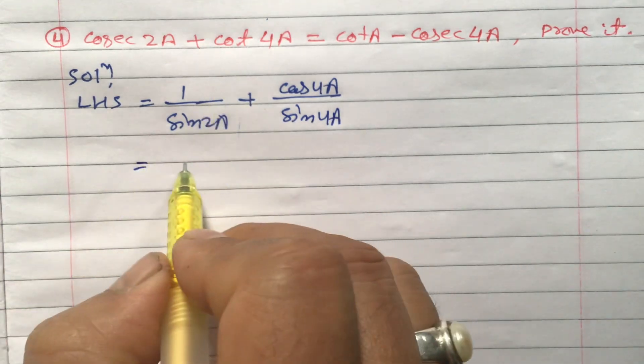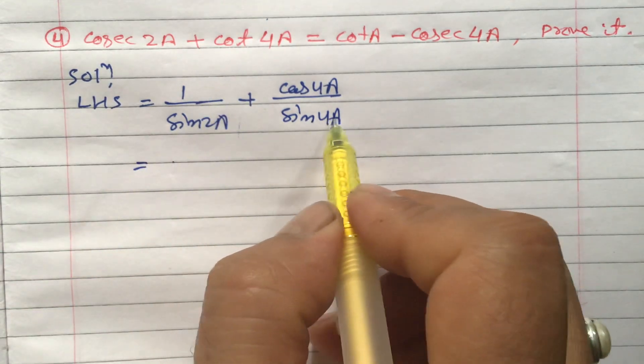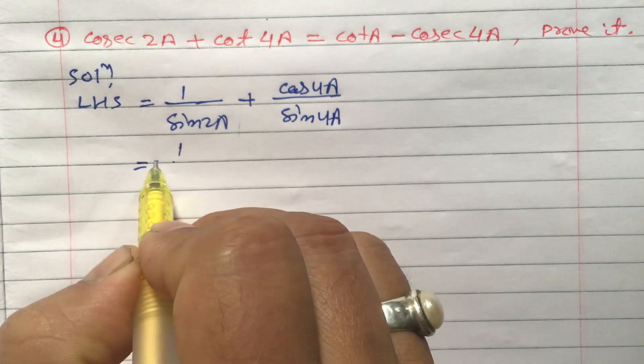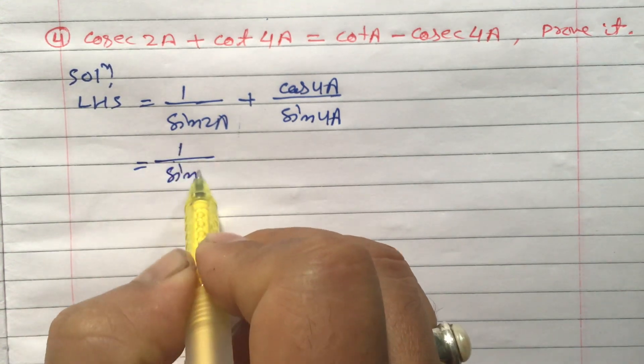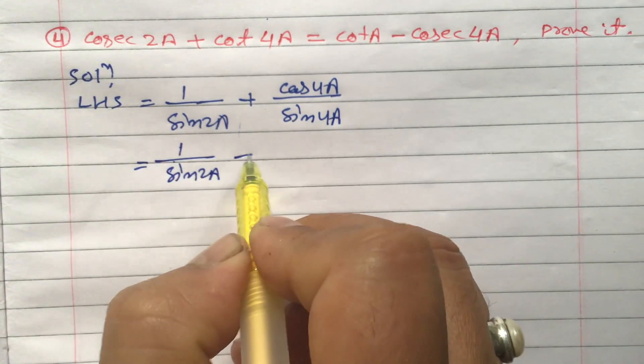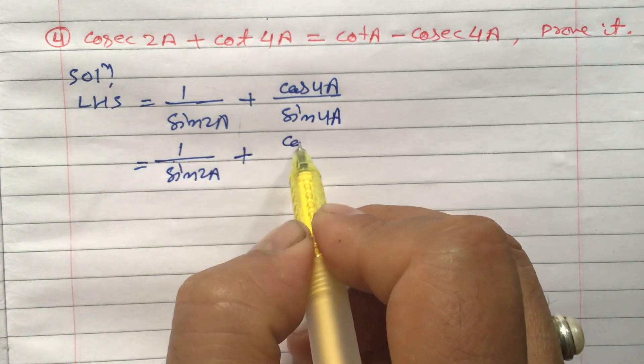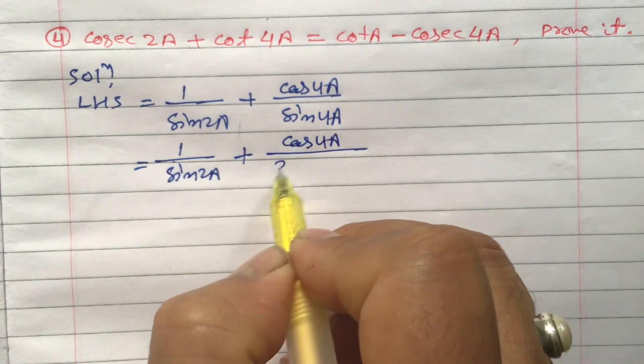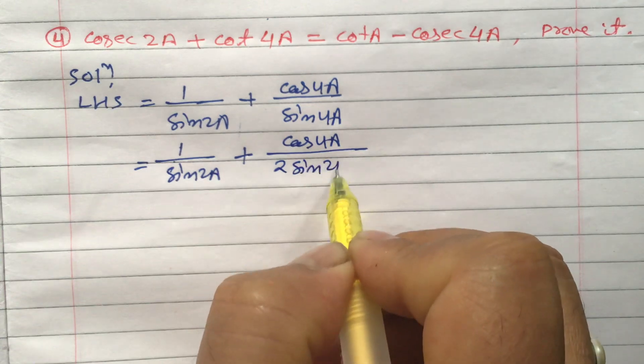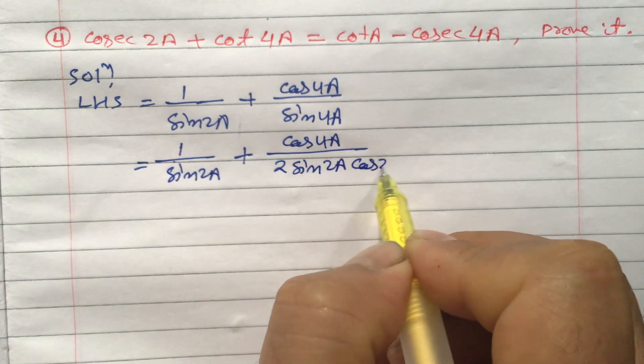This equals to, now we can change this sine 4a formula: 1 by sine 2a plus cos 4a divided by 2 sine 2a cos 2a.